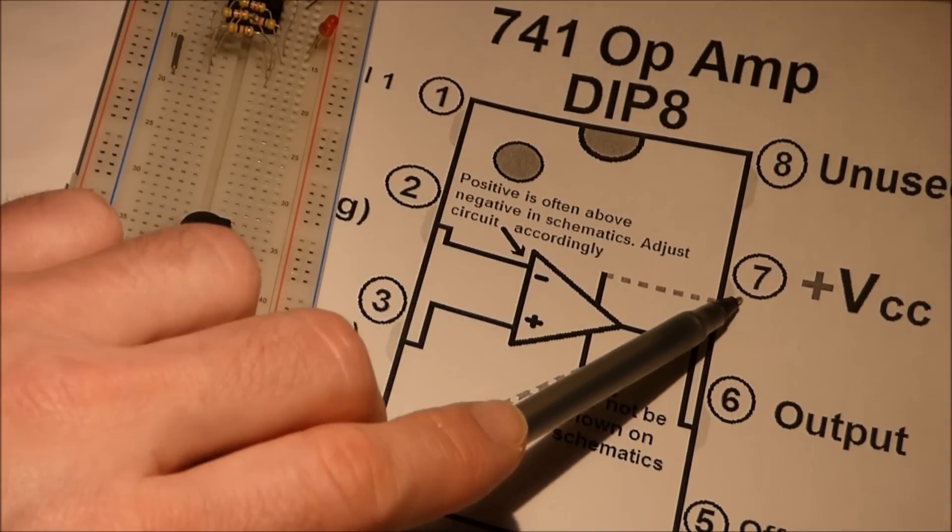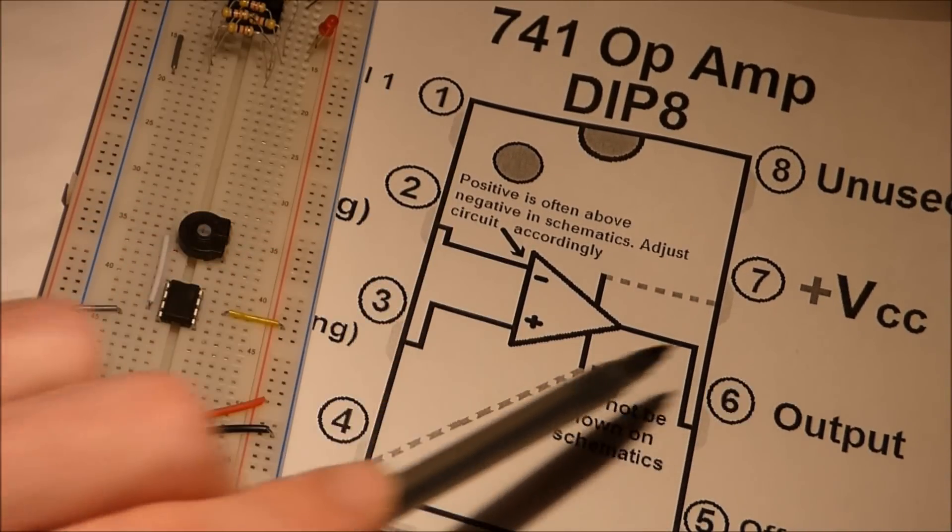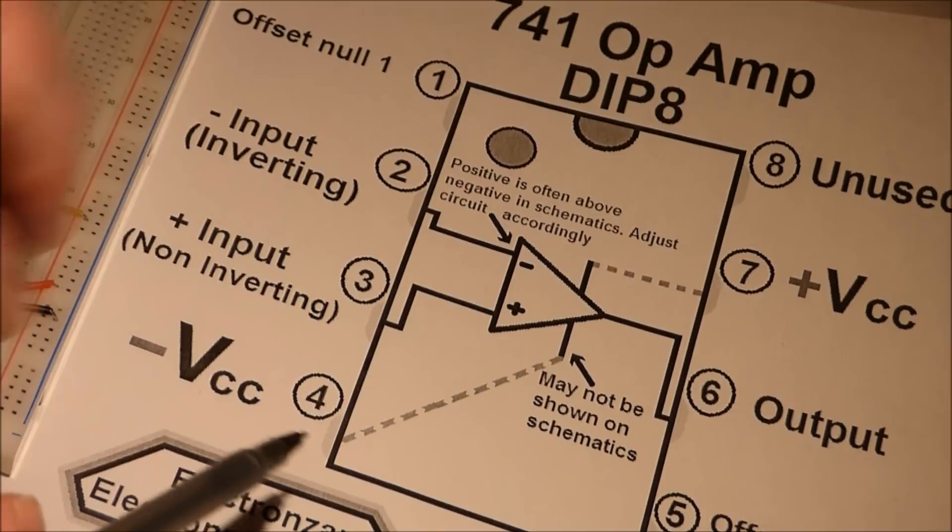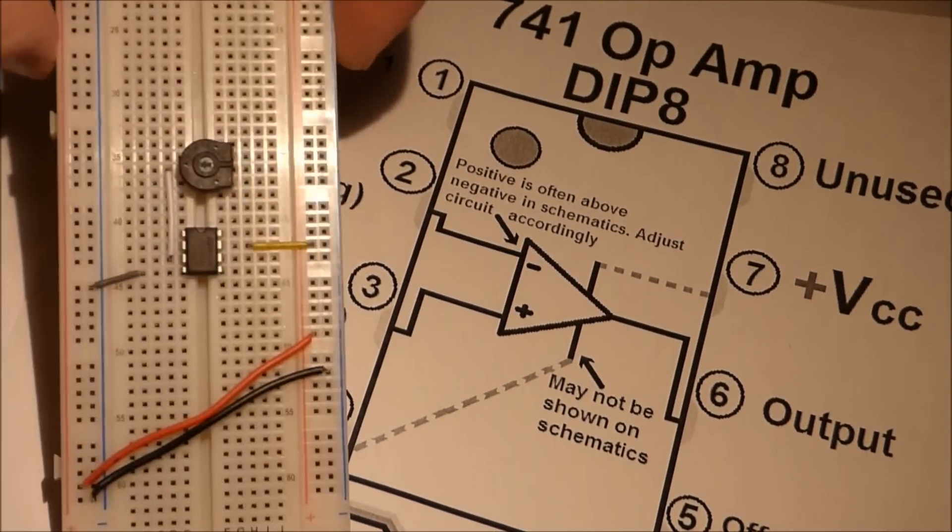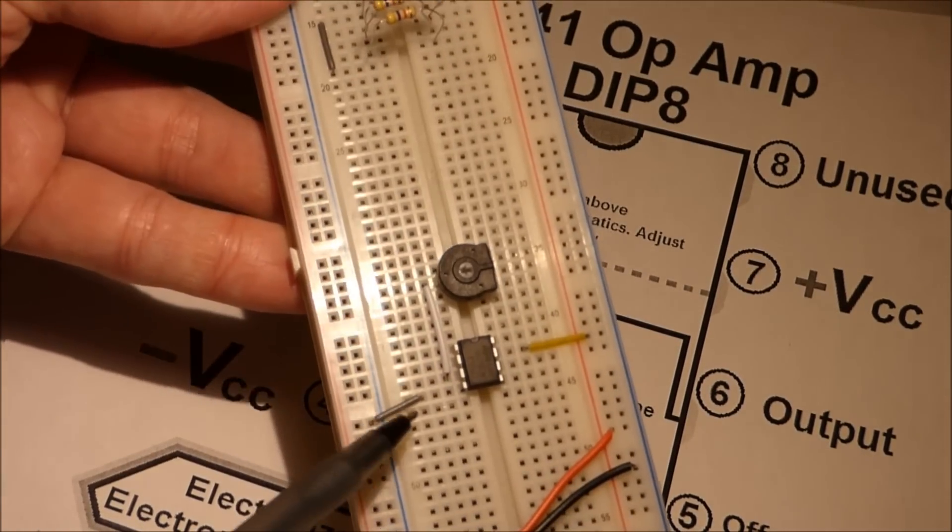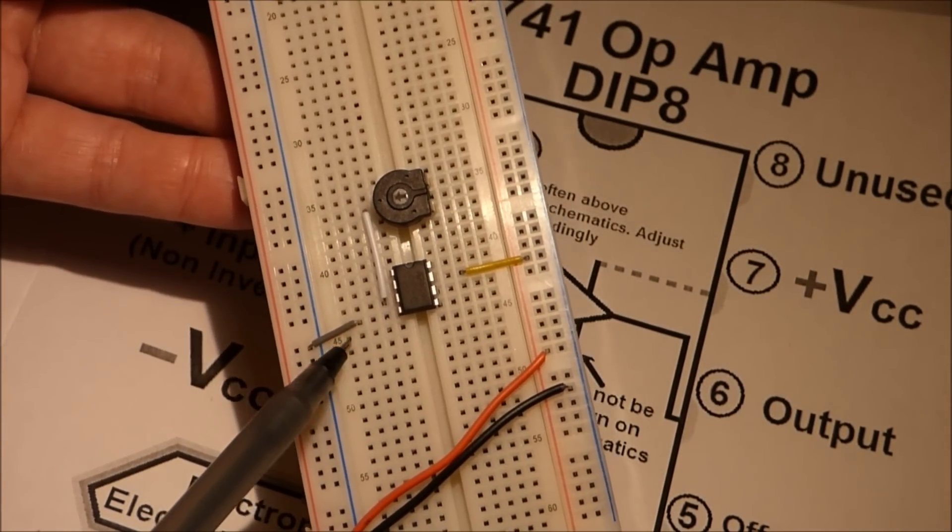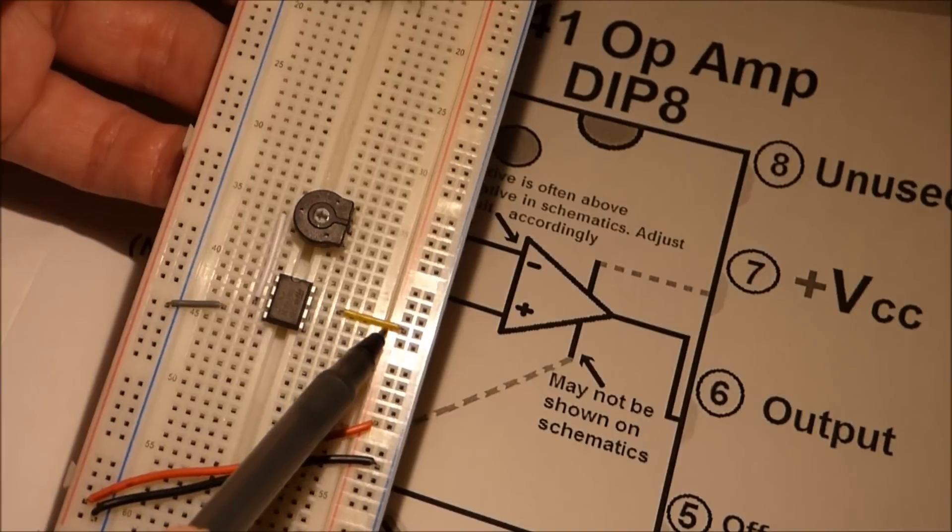Pin 7 here gets connected to the positive power source, and then pin 4 down below gets connected to the negative source. As you can see here, pin 4 down here goes right to negative, and then pin 7 up here goes right to positive.